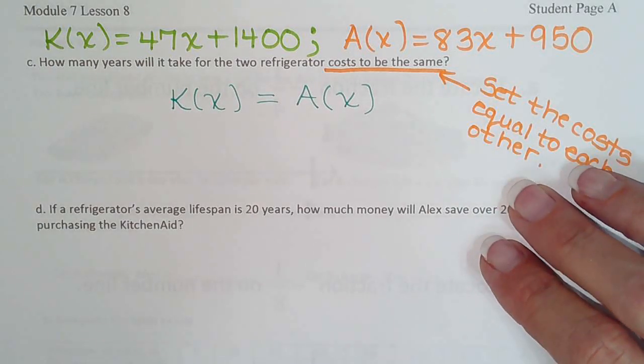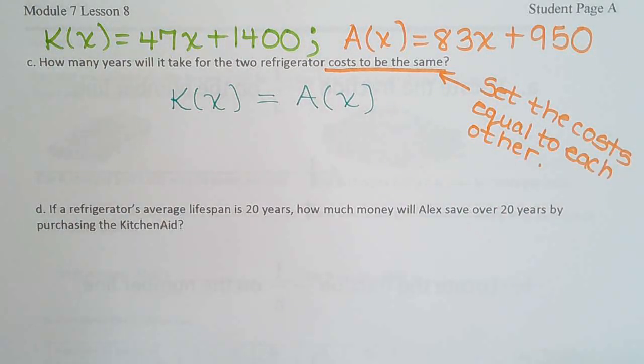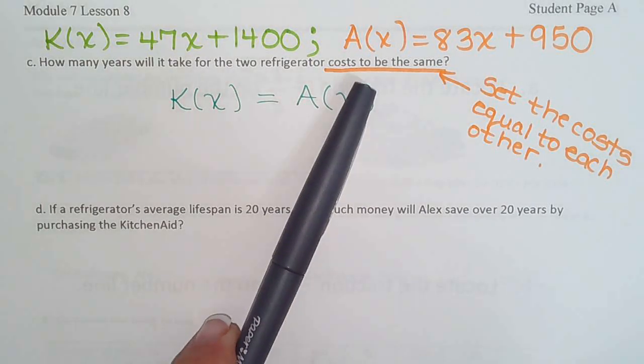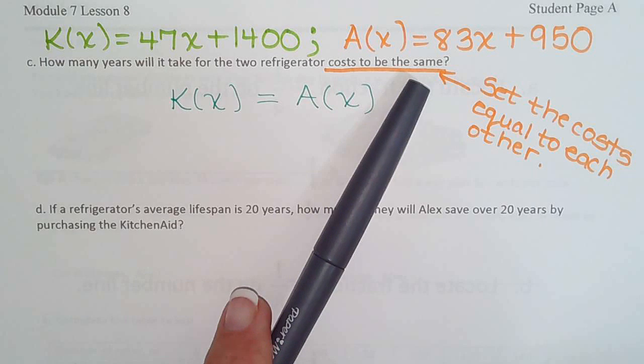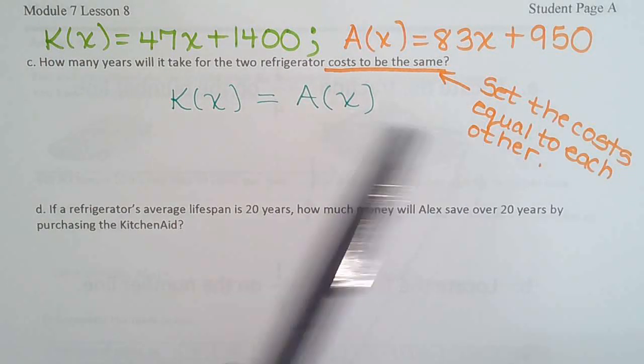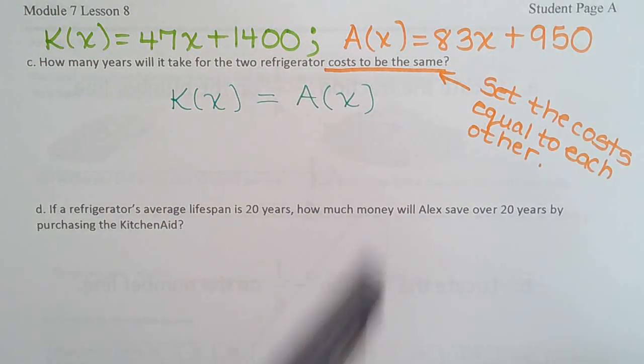Okay, continuing on page 8 at the top. We just decided that for the cost to be the same, we have to set the two costs equal. So K of X must equal A of X.